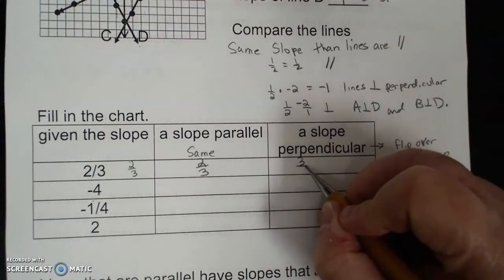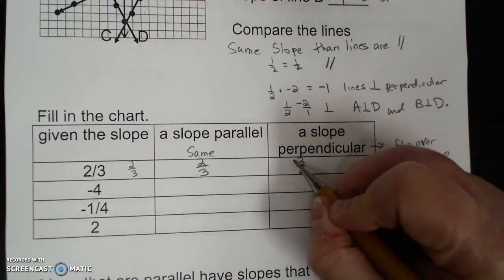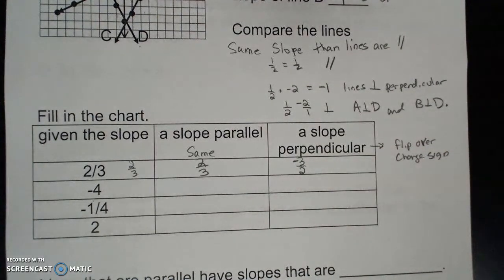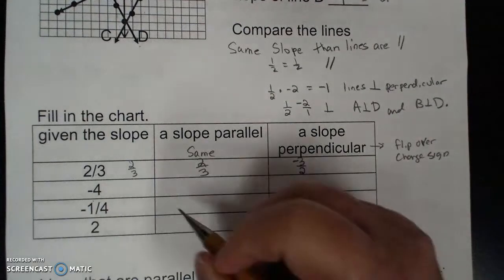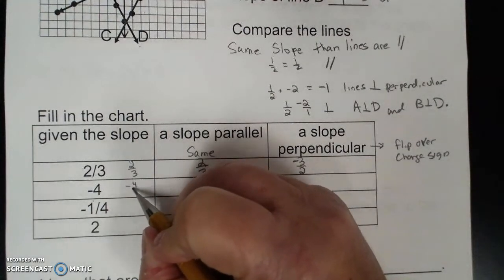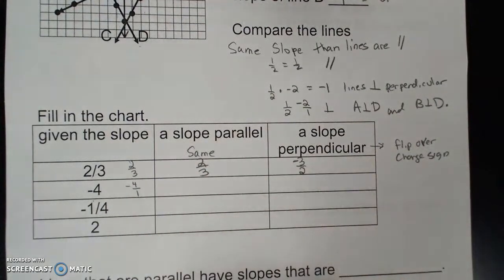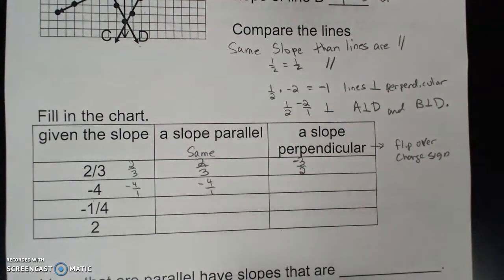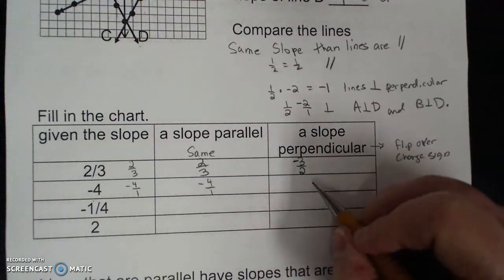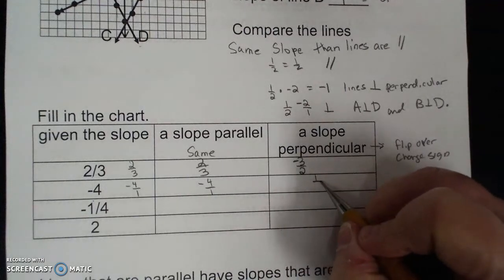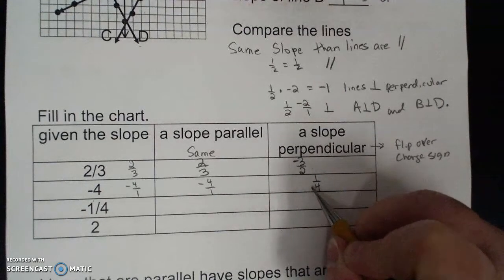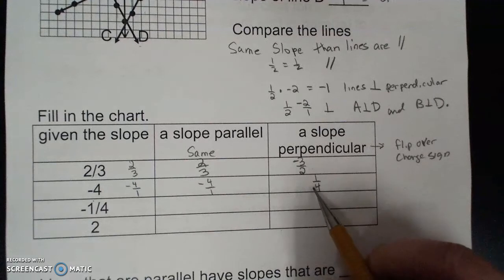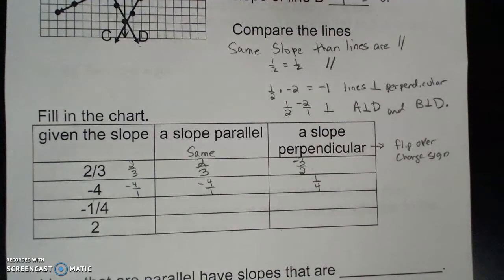So for a slope of negative 4, I'll write it as negative 4 over 1 as a fraction. The parallel slope is the same: negative 4 over 1. For perpendicular: flip it over, and instead of negative 4 it becomes positive, so the perpendicular slope is 1 over 4 — wait, positive 1 fourth.